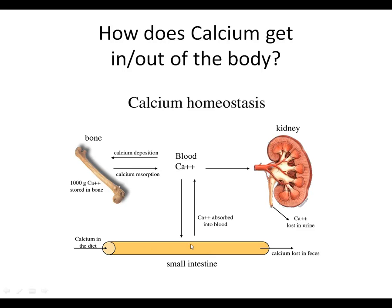Any additional calcium that's not absorbed leaves the body through the feces. Calcium is also stored in bone, so when the body needs it, it can pull calcium out of the bone into the blood. Likewise, when blood calcium levels are high, calcium can be taken out of the blood by depositing it into the bone.